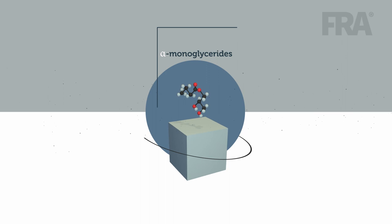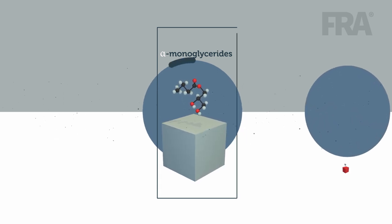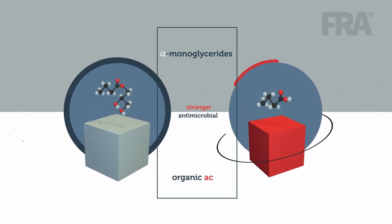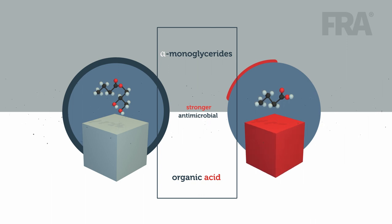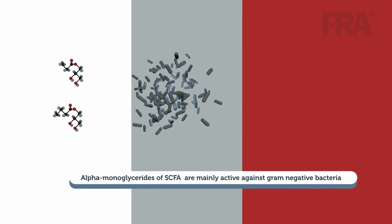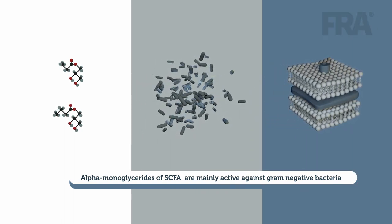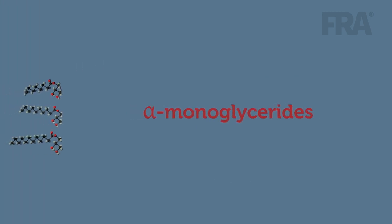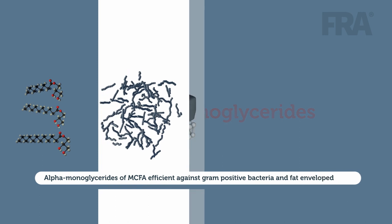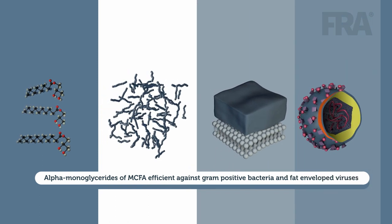More importantly, research has shown that alpha-monoglycerides have a much stronger antimicrobial effect compared to their corresponding free fatty acids. Alpha-monoglycerides of short-chain fatty acids are mainly active against gram-negative bacteria, whereas alpha-monoglycerides of medium-chain fatty acids are more efficient against gram-positive bacteria and fat-enveloped viruses.